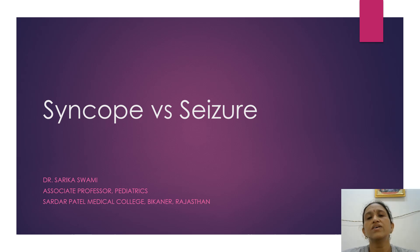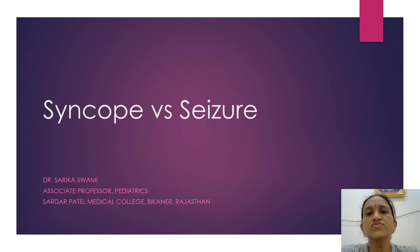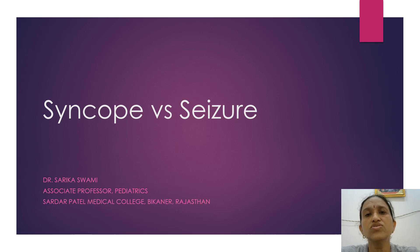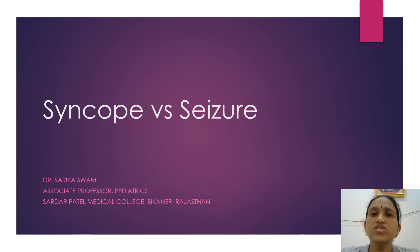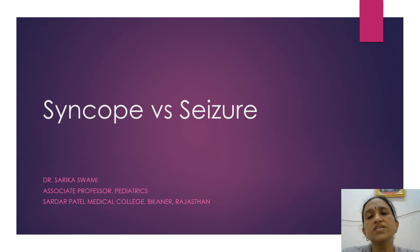Many times a child comes to us with just a history that the child fell down. The common things which come to our mind are that either the child fell because of syncope or because of some seizure activity. To differentiate between the two is very important because the line of treatment is different in both conditions. So let us proceed with the differences.